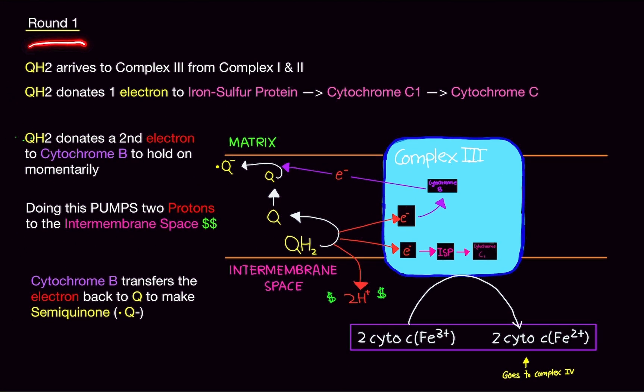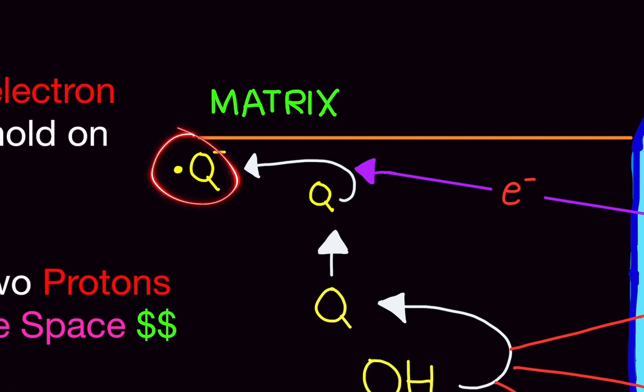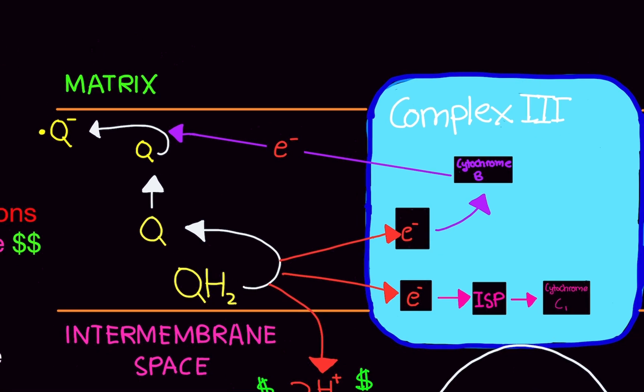This is why we have two rounds. So, round one, we make a semiquinone. Now, you're probably wondering, wait a second. What was the purpose of transferring the electron to cytochrome B just to have it go back?